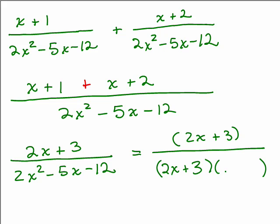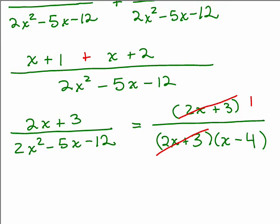Let's see if 2x plus 3 is a factor of 2x squared minus 5x minus 12. So 2x times x gives 2x squared, and 3 times negative 4 gives negative 12. Using FOIL: 2x squared minus 8x plus 3x minus 12 gives negative 5x — yes, that works! So we cancel the common factor 2x plus 3. The final answer is 1 over x minus 4. Remember, there's always a 1 left in the numerator when everything cancels.